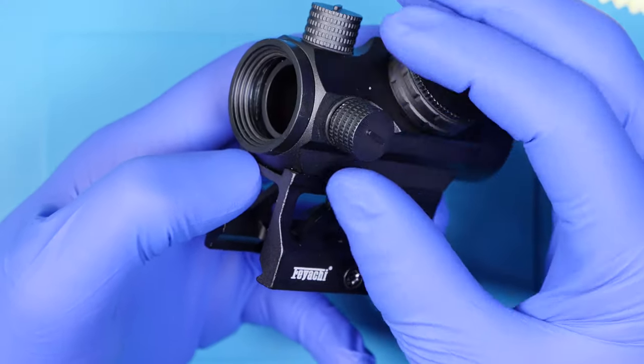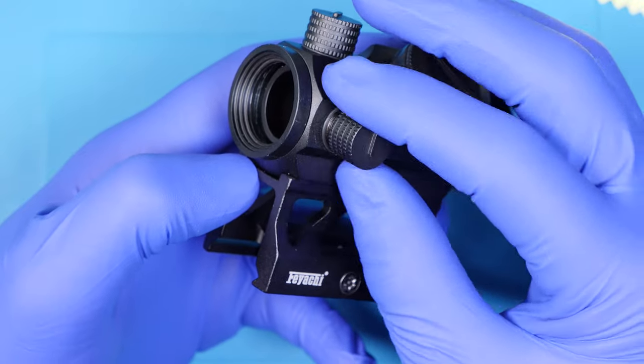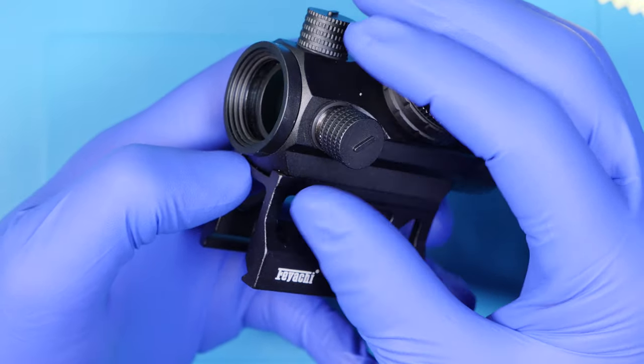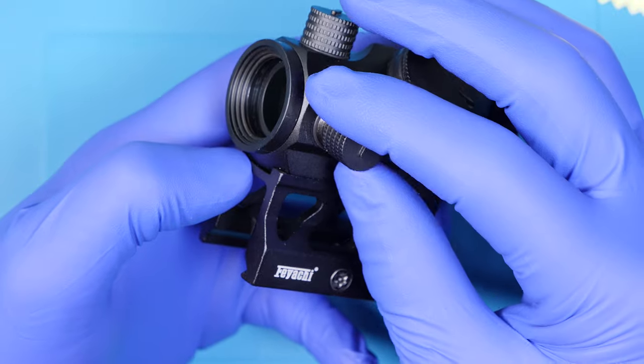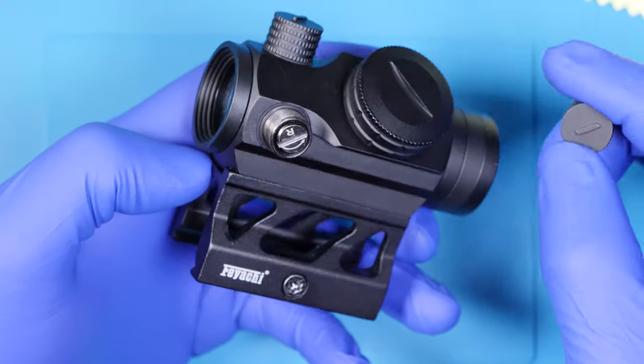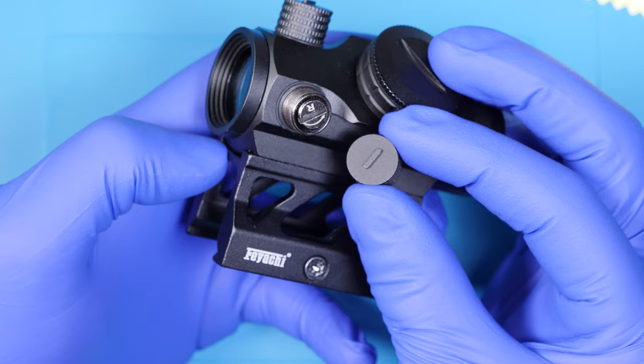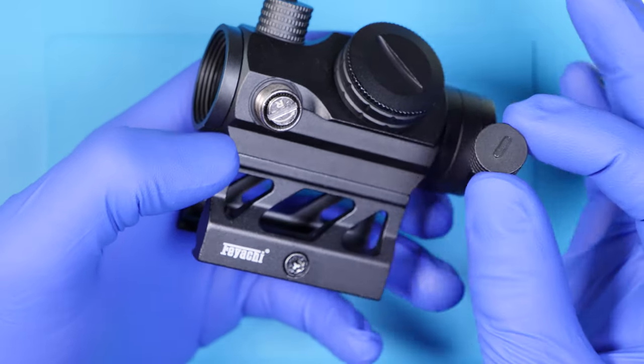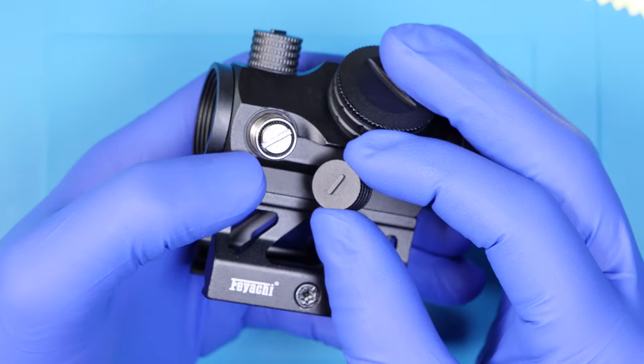My absolute favorite feature of this sight is regarding the windage and elevation adjustment knobs. I'm a precision player, I'm always trying to sight my optics in the best that I can. With the Feyachi V30, when you remove the protective caps to access the windage and elevation dials, the caps themselves provide the tools needed to make the adjustments. This means it's as easy as can be to access and adjust these settings while out on the field or away from your tools.